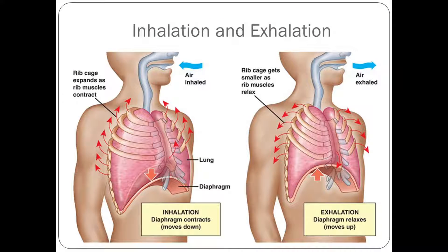Let's understand the process of inhalation and exhalation. Inhalation is the process of taking air into the lungs. There is a muscular sheet called the diaphragm which is present below the lungs. During inhalation, the diaphragm contracts and pulls downwards, causing an increase in the thoracic cavity and a decrease in pressure. Thus the air from outside enters the lungs and the lungs expand.